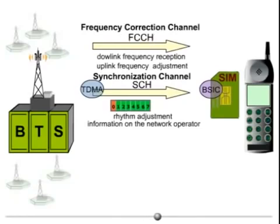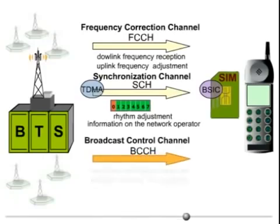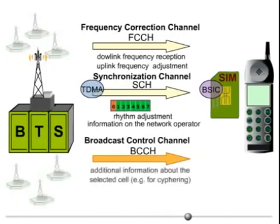While the mobile station uses the FCCH to adjust its frequency, and the SCH for synchronization and network identification, the broadcast control channel, BCCH, which is also sent by the BTS, supplies the mobile station with additional information about the selected cell, for example, for ciphering.